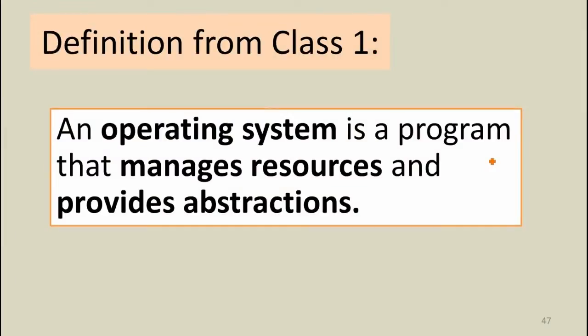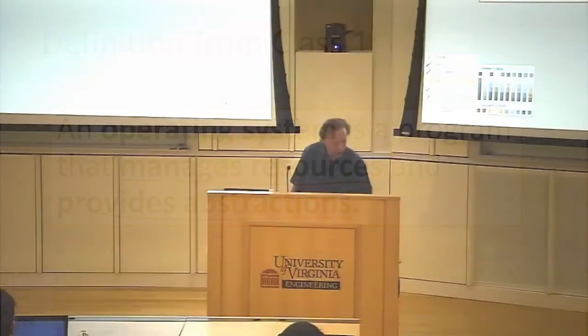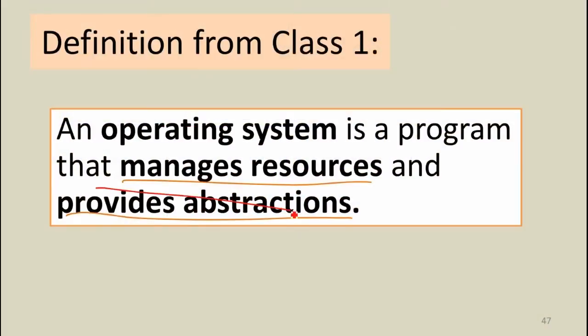Way back in class one, we defined an operating system as a program that manages resources and provides abstractions. The exokernel project's philosophy is that that is a bad definition. If your goal is to make the operating system small and give applications as much control as possible over resources, the only thing the OS should do is manage resources — it shouldn't be responsible for providing abstractions. We should let applications pick their own abstractions, and by removing abstractions from the OS, we can keep it small, simple, and give as much control as possible to programs.